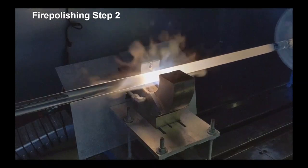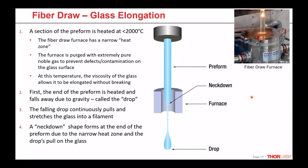After surface prep, the preform goes to the fiber draw tower. The elongation happens in a fiber draw furnace — somewhere in the range of 2000–2300°C, very hot — that's the temperature at which the viscosity of the glass is softened enough that we can actually pull it like a taffy filament. The furnace has a very narrow heat zone so it only heats a small section of the preform at a time, and the preform is purged with extremely pure noble gas like argon to ensure there's no combustion or contamination in the furnace.